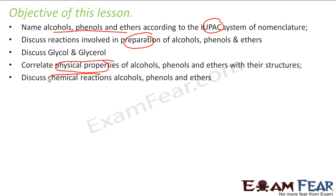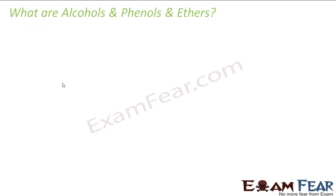We'll also cover the chemical reactions involved in alcohols, phenols and ethers. So basically in this chapter we'll discuss their IUPAC names, their preparations, their physical properties and their chemical reactions — that's the general format of the whole chapter. The first question before we even start is: what are alcohols, phenols and ethers?